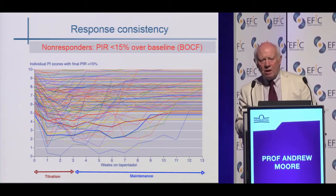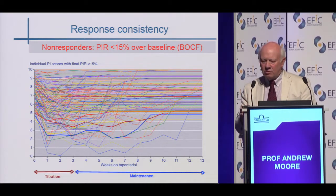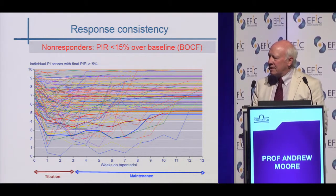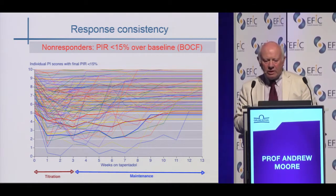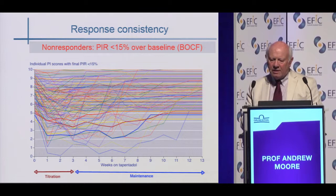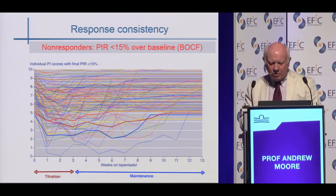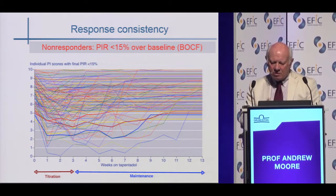Now I want to talk about consistency. What I'm going to show you is a whole series of lines — each line is an individual patient. We've used a very conservative imputation method: whenever a patient withdraws for any reason whatsoever, even if it's just because they missed the bus, that is counted as a withdrawal, a failure, and the patient is given the pain intensity they started with. Here we're looking at people who were essentially non-responders — a pain intensity reduction of less than 15% at the end of the trial. In these trials there's a three-week titration period followed by a 13-week maintenance period. You can see some withdrawal with pain reduction in the first week or so, but for most people, largely because they've withdrawn due to adverse events, their pain intensity is high for almost the whole course of the trial.